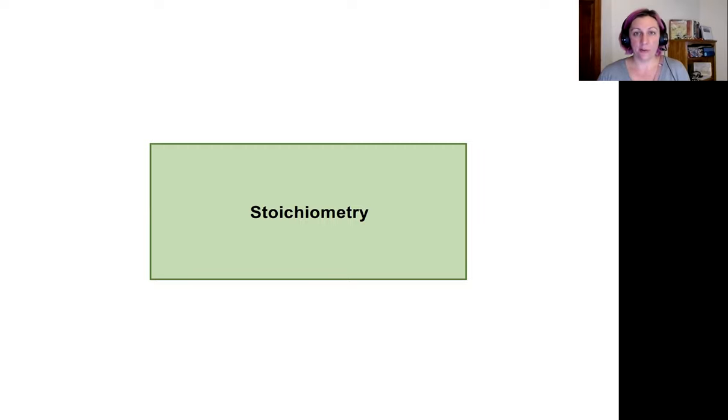In this lecture and the one following, we're going to talk about stoichiometry, which is kind of a mouthful of a word. Really, it's about predicting the amount of reactants or products that will be made or consumed in any reaction if we have information about one other component of the reaction.